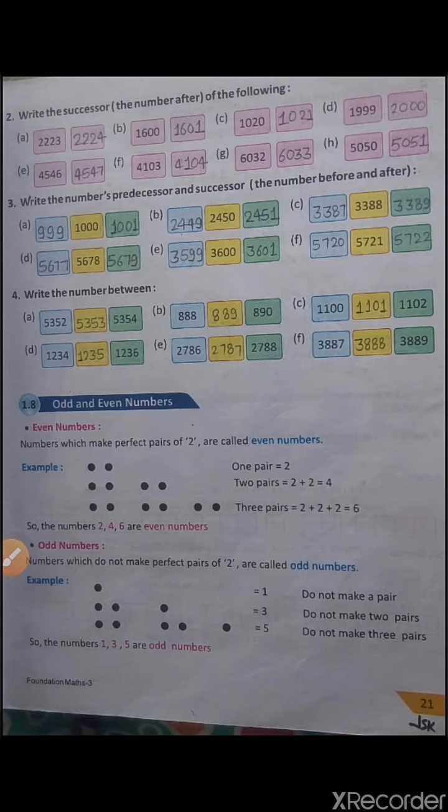The predecessor is 5352. If the predecessor is given, how can we find the number? Yes, by adding 1. If we add 1 to 5352, what will we get? 5353. And we can also find it this way: 5354, which is the successor — by subtracting 1 from it, we also get 5353.